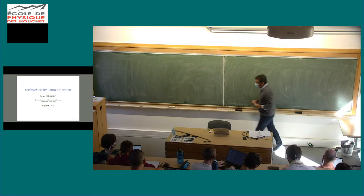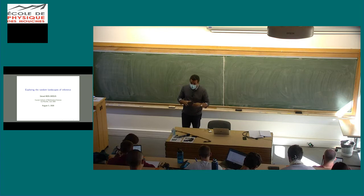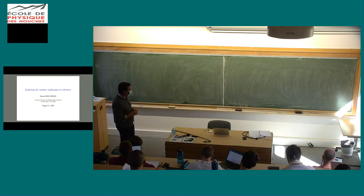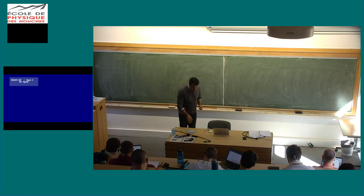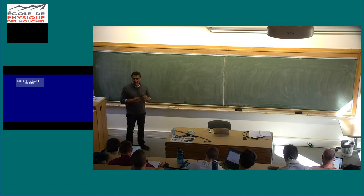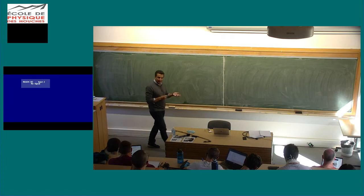I will explain a few things about how you explore the random landscapes of inference. I will switch at some point to slides so that you have some formulas, but I want first to start with the blackboard. This set of lectures will be full of contradictory statements. I will say things that are supposed to be important, and then they are not important, and then some other things are important, and then they are not important. A big mess.